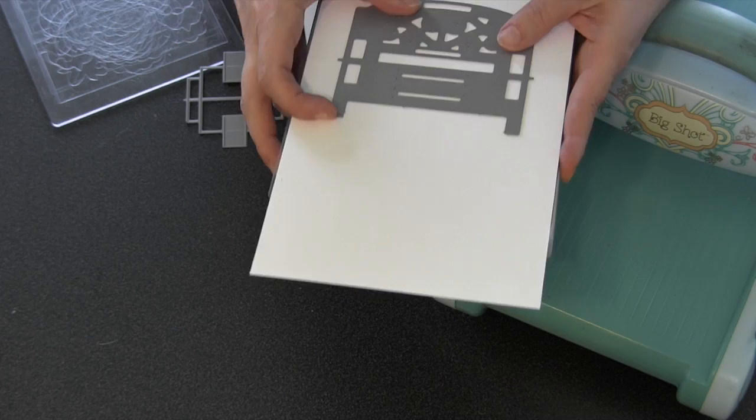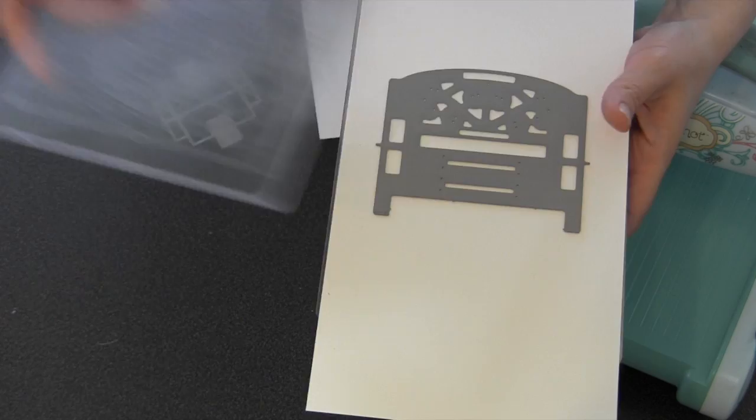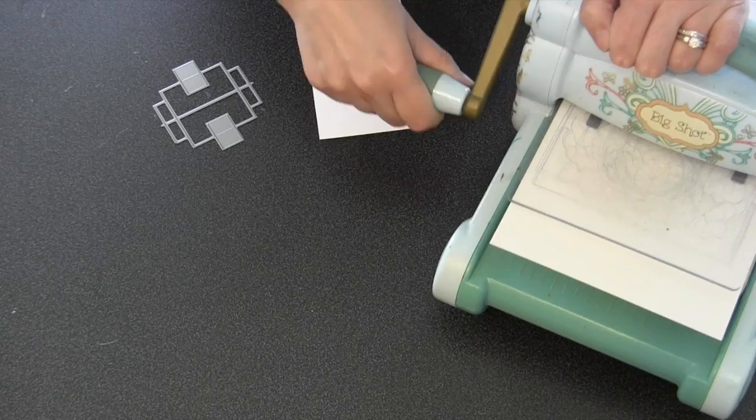The way Pop It Ups dies work is that you align them on the card fold and then it cuts the pop up into the card. You get to decide your card size, you get to decide where along the fold. The little alignment nubs on the side of the garden bench in this case will help you align them.